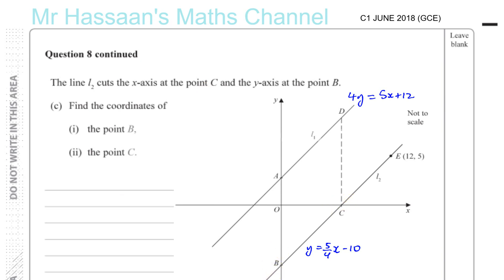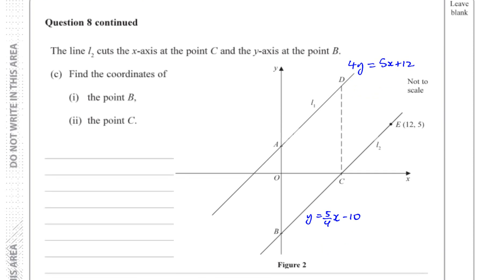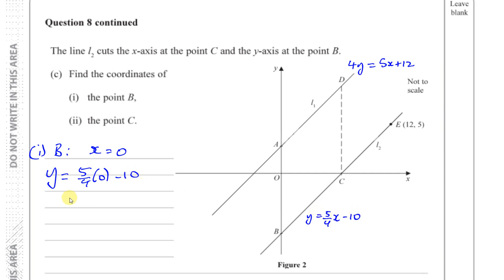For point B on the y-axis, x equals 0. Substituting: y equals 5 over 4 times 0 minus 10, which is minus 10. Since the equation is in the form y equals mx plus c, the y-intercept is simply minus 10. Therefore the coordinates of point B are (0, minus 10).